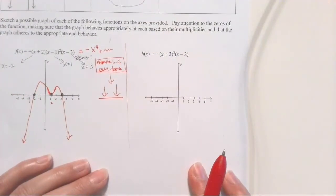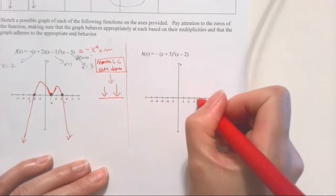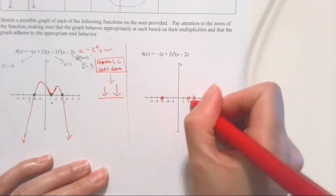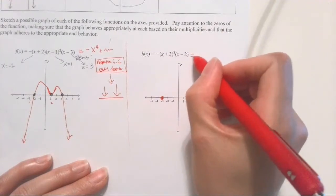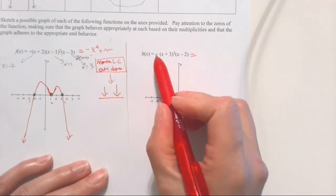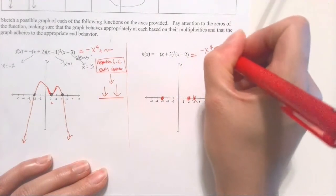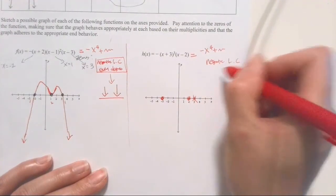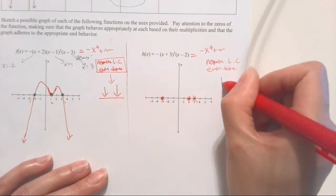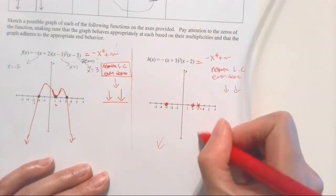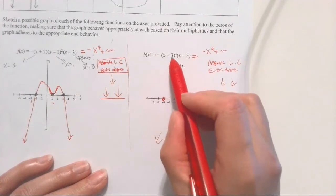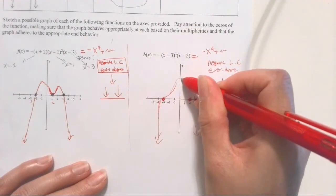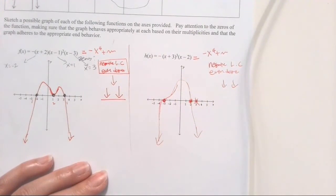Let's do one more. The zeros are negative three and two. If I distribute and take only the highest exponents, I get negative x cubed times x — which is negative x to the fourth power. So it's a negative leading coefficient and even degree again, meaning down and down. Negative three has a multiplicity of three, so when you graph it, it should look like a cubic around negative three. Two has a multiplicity of one, going down. That's what my graph looks like.